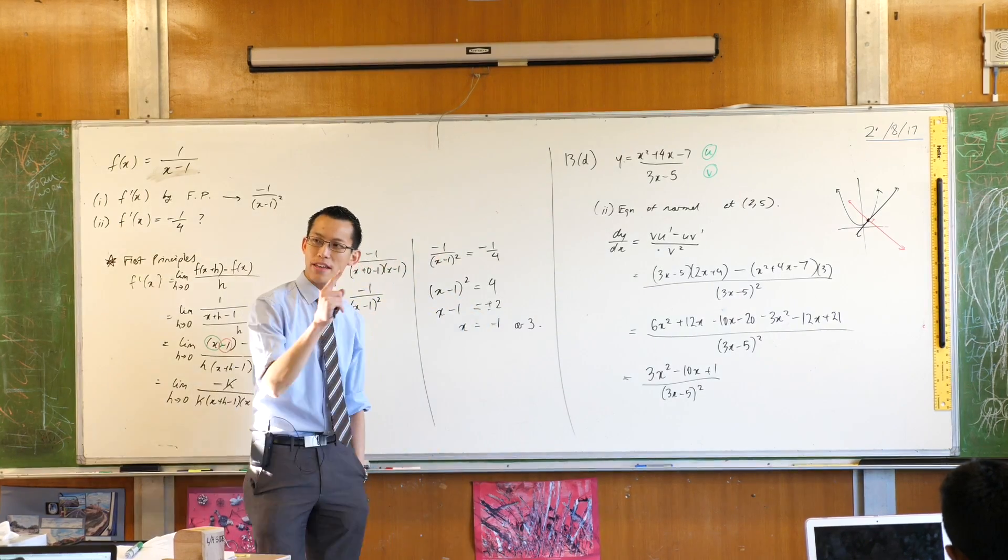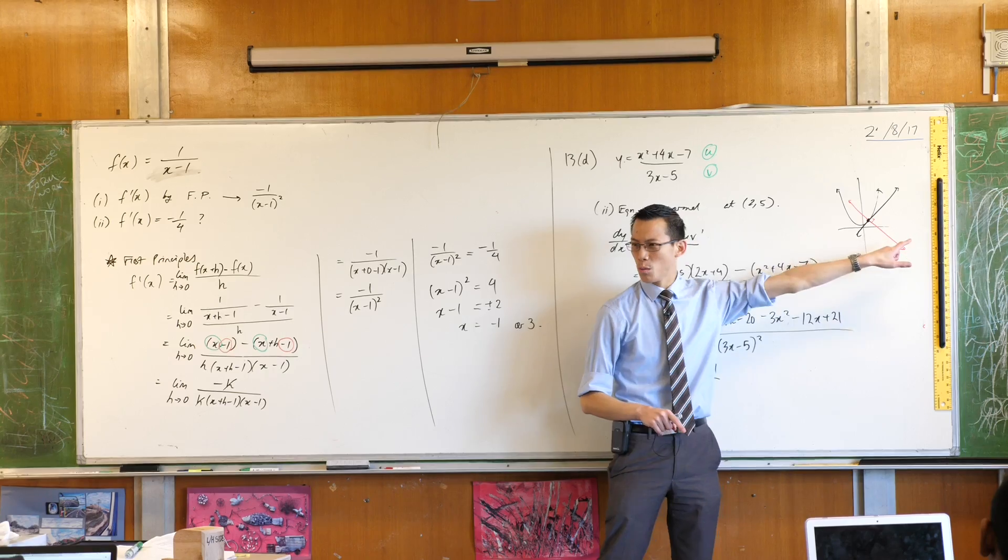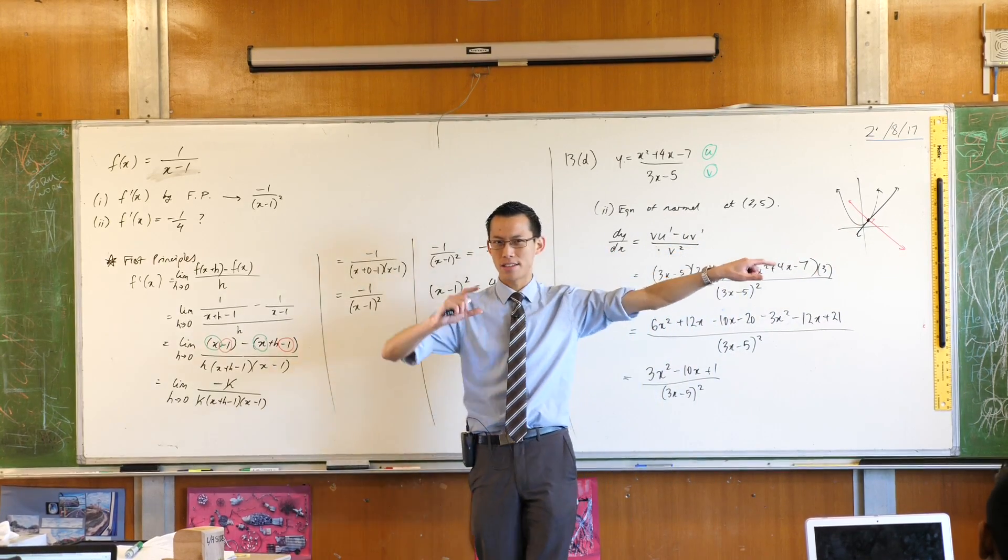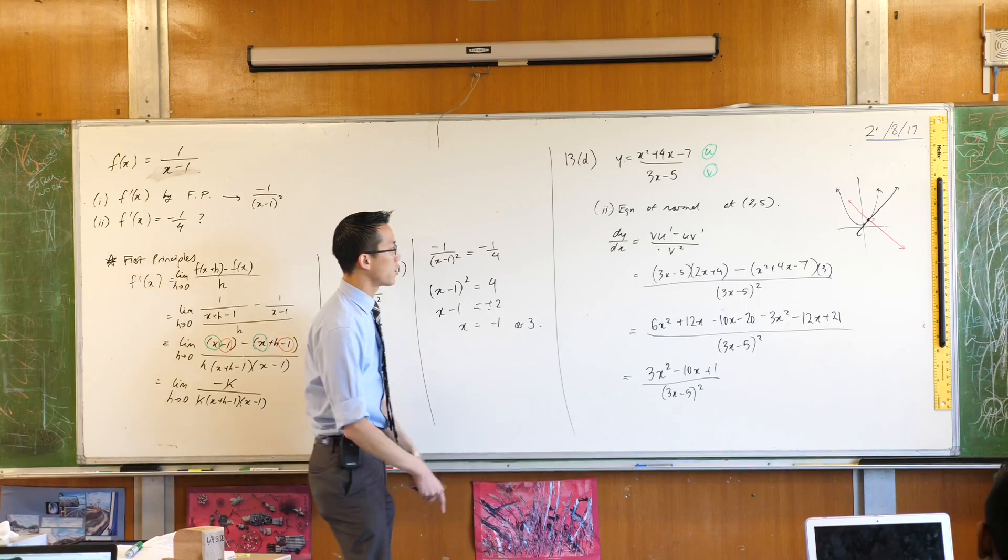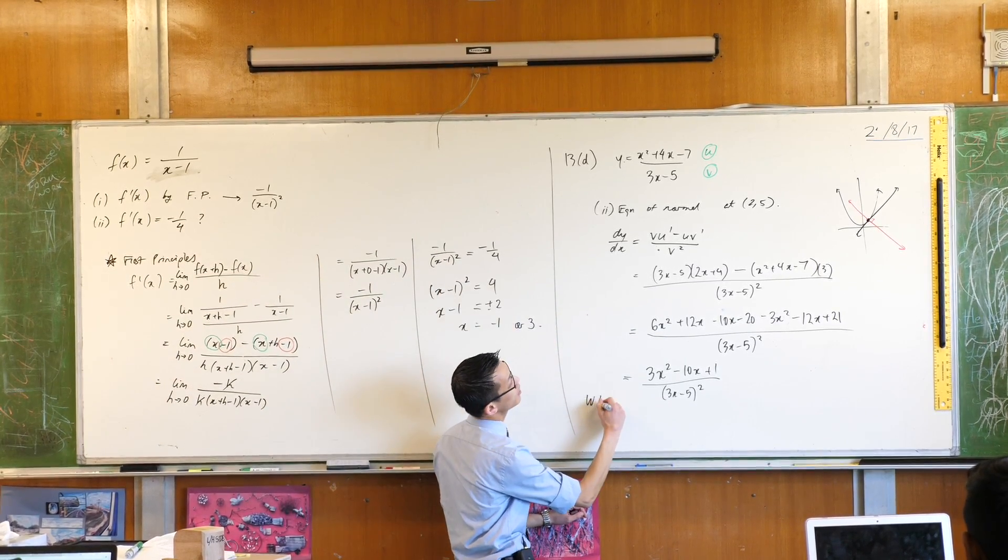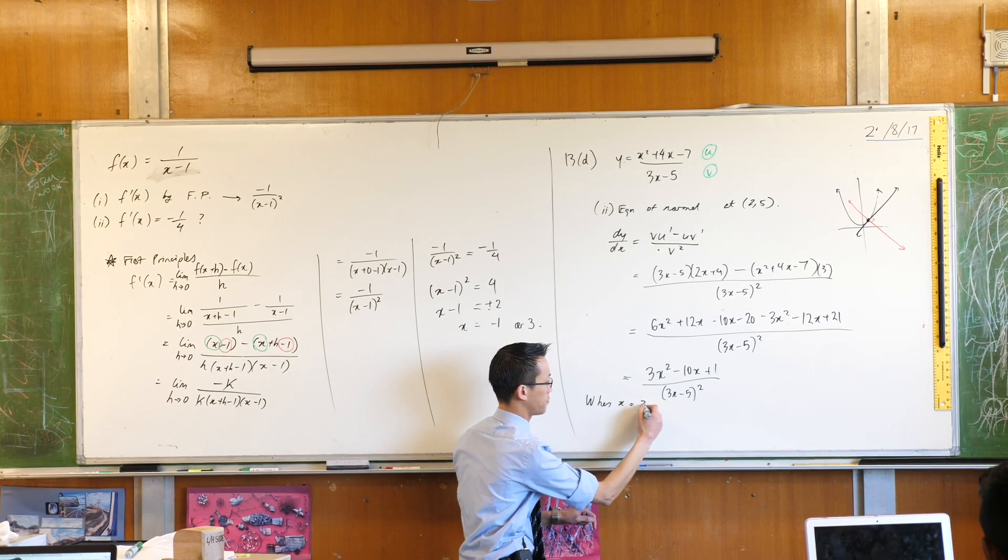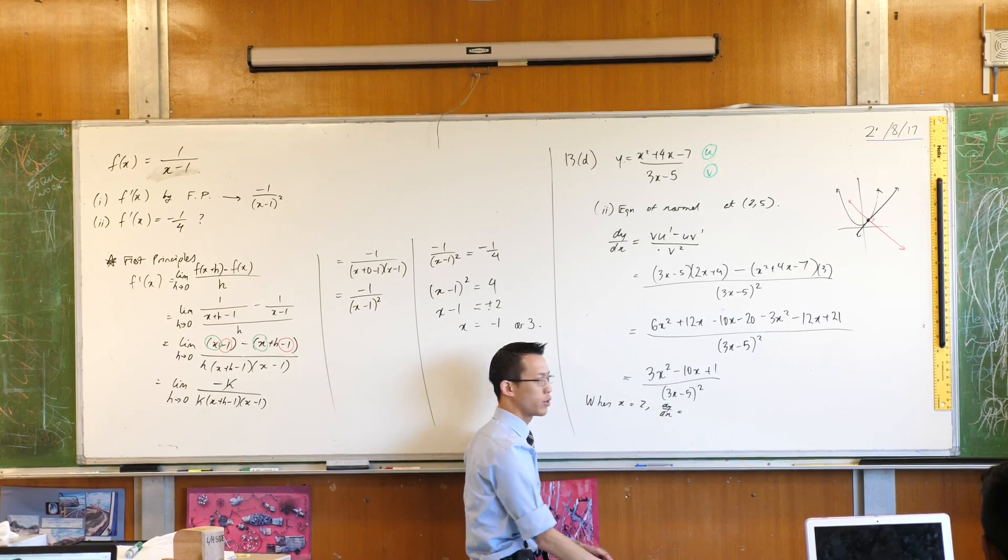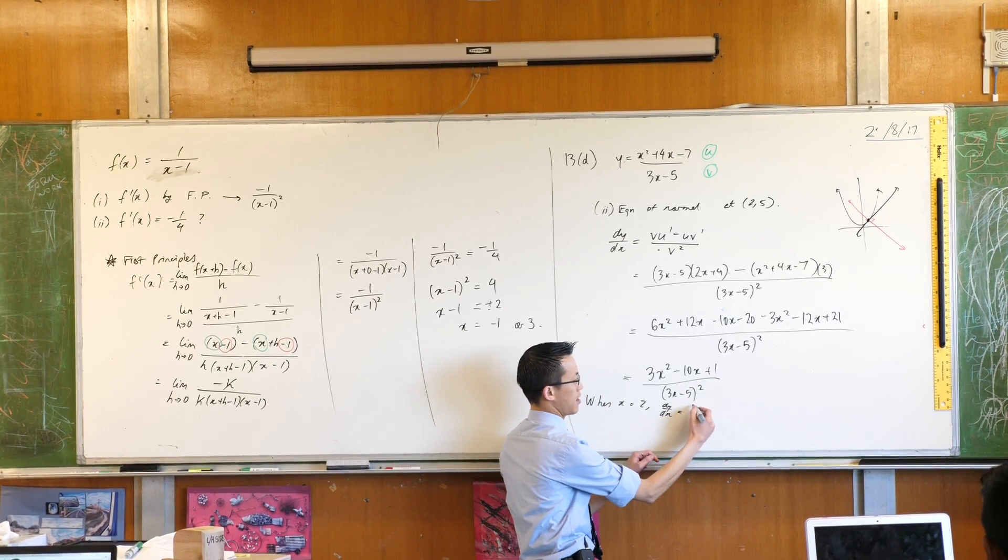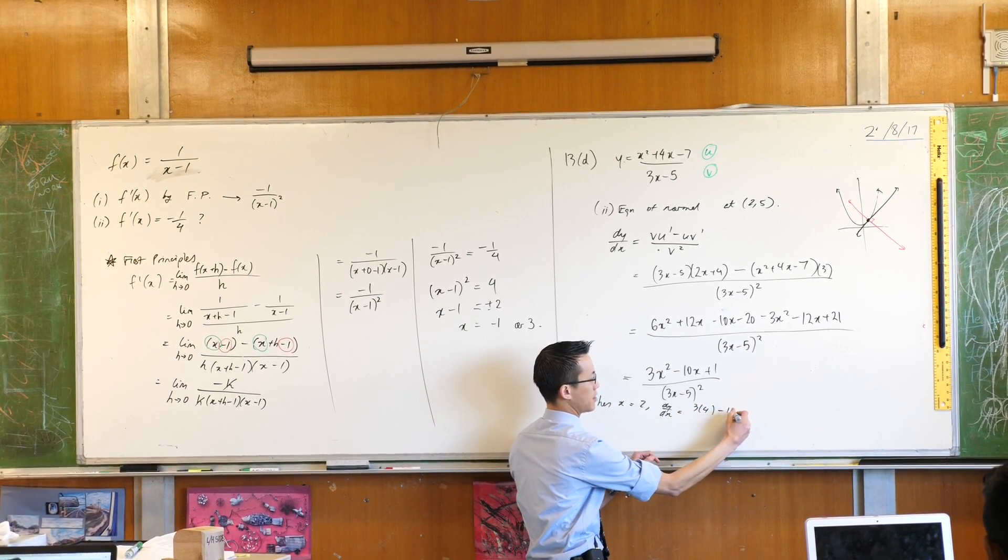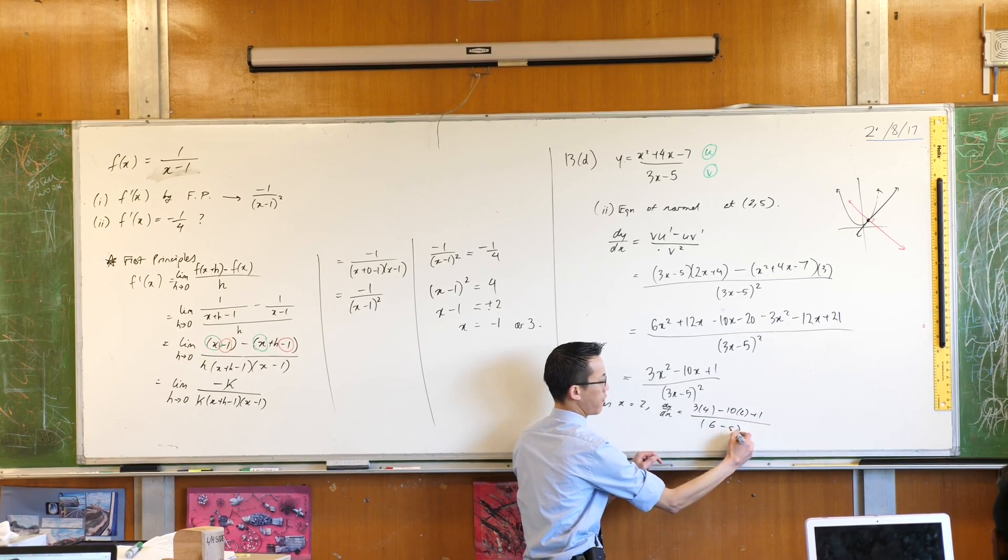Now what I want to do is I want to find the gradient at this point and then to get to the gradient of the normal what will I do with that? I'll take the negative reciprocal. That'll give me the gradient I need. So what I'm going to do is I'm going to say when x equals 2, my derivative will be equal to and then I'm going to have to evaluate this thing. Okay so this is going to be 3 times 4 minus 10 times 2 plus 1 on 6 take away 5 squared.